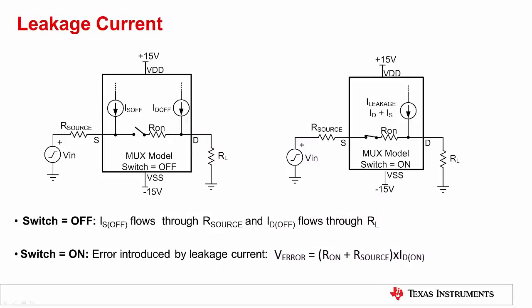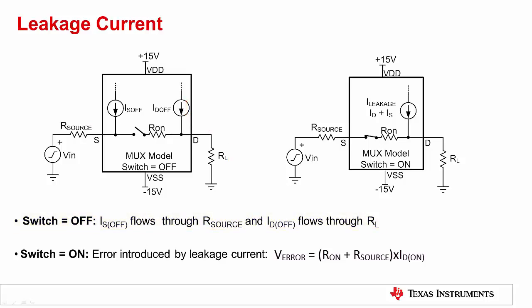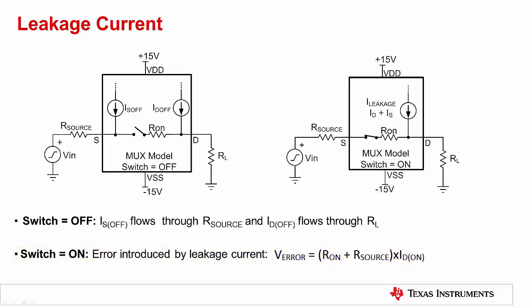This slide shows the simplified model of MUX leakage current flow when the switch is on and when it is off. When the switch is off, IS off flows to the source impedance at the input, and ID off flows to the drain pin through the load resistor connected to the output. When the switch is on, we can approximate leakage current flowing through the source and drain pin to be equal — that is, IS on equals ID on. The voltage error introduced by the leakage current at the input side when the switch is on is represented by the equation: V error equals R on plus R source times ID on.